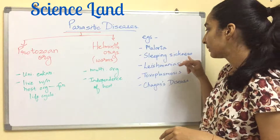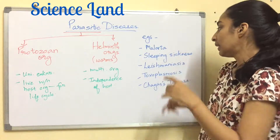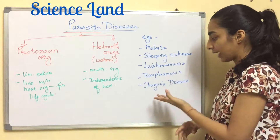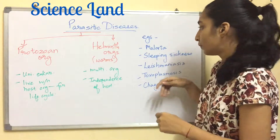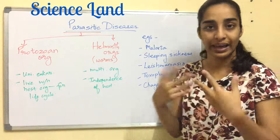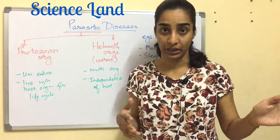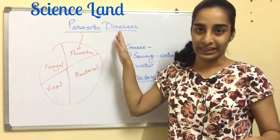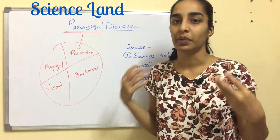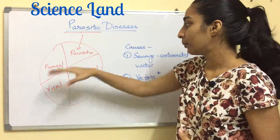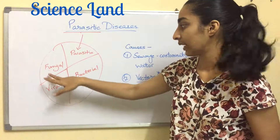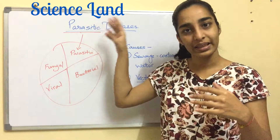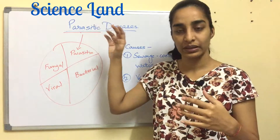There are many examples of parasitic diseases. The most common are malaria, African sleeping sickness, leishmaniasis, toxoplasmosis, and Chagas disease, all of which will be elaborated in depth separately.